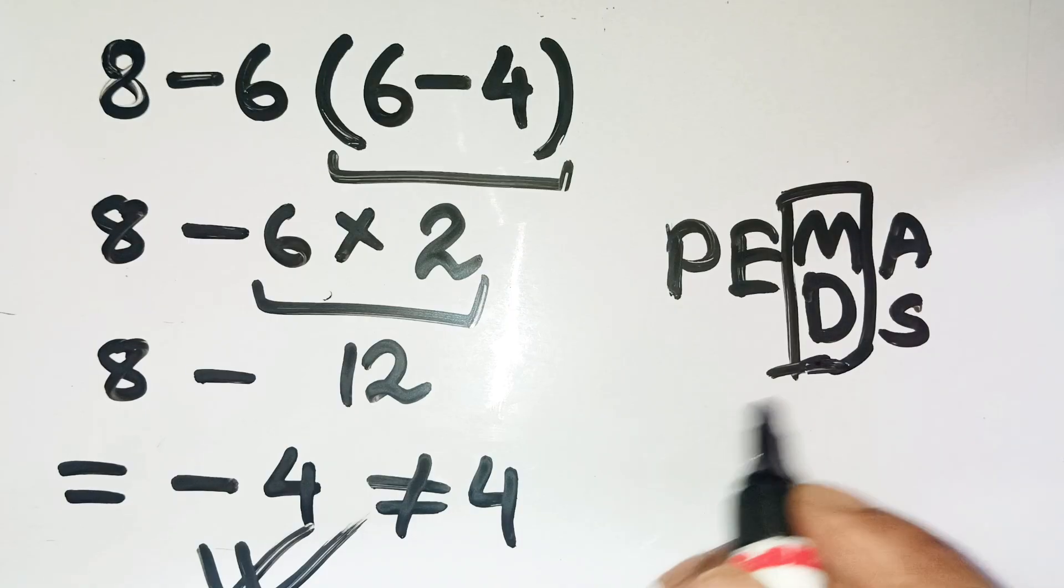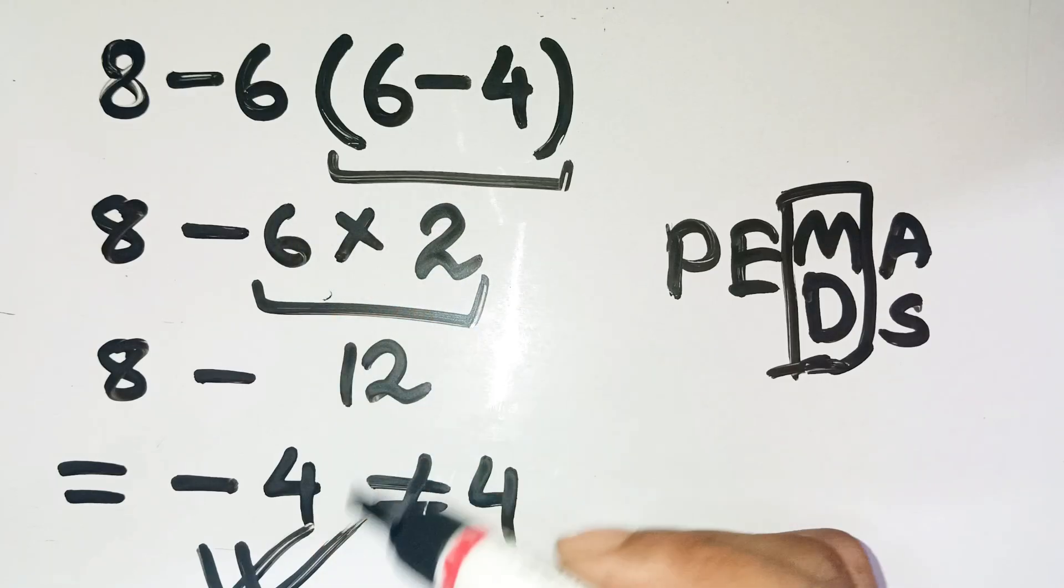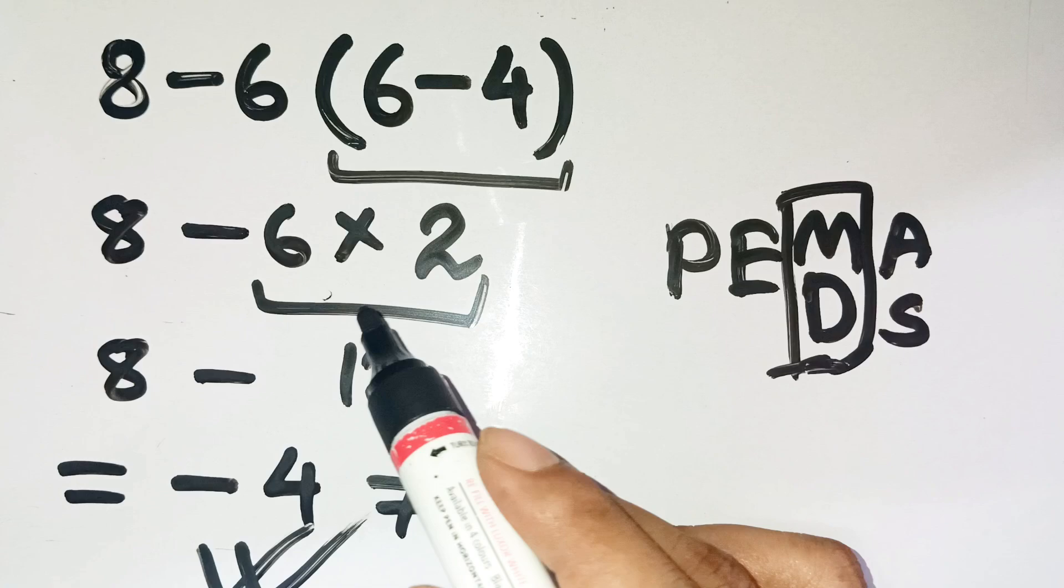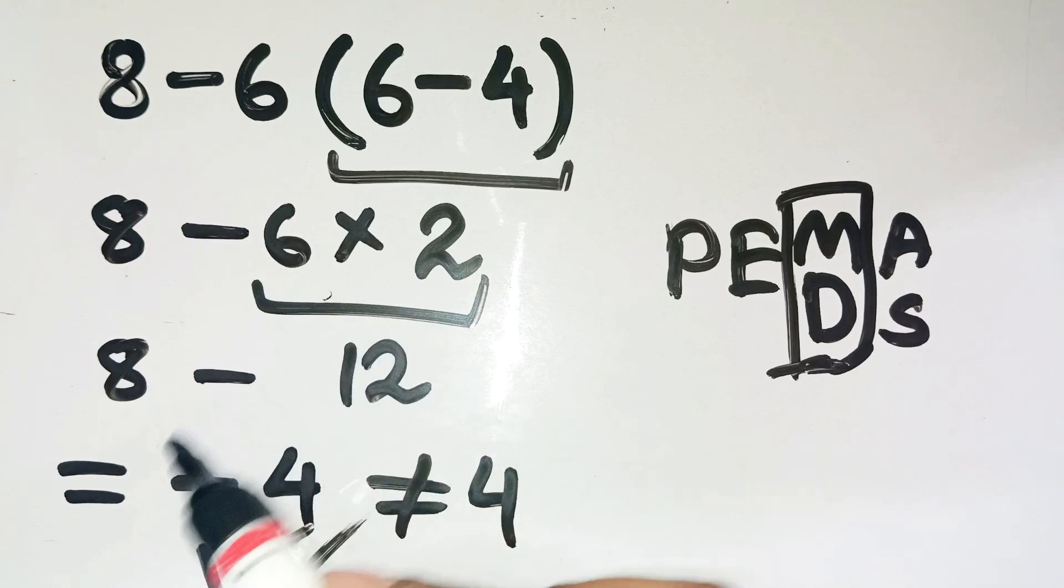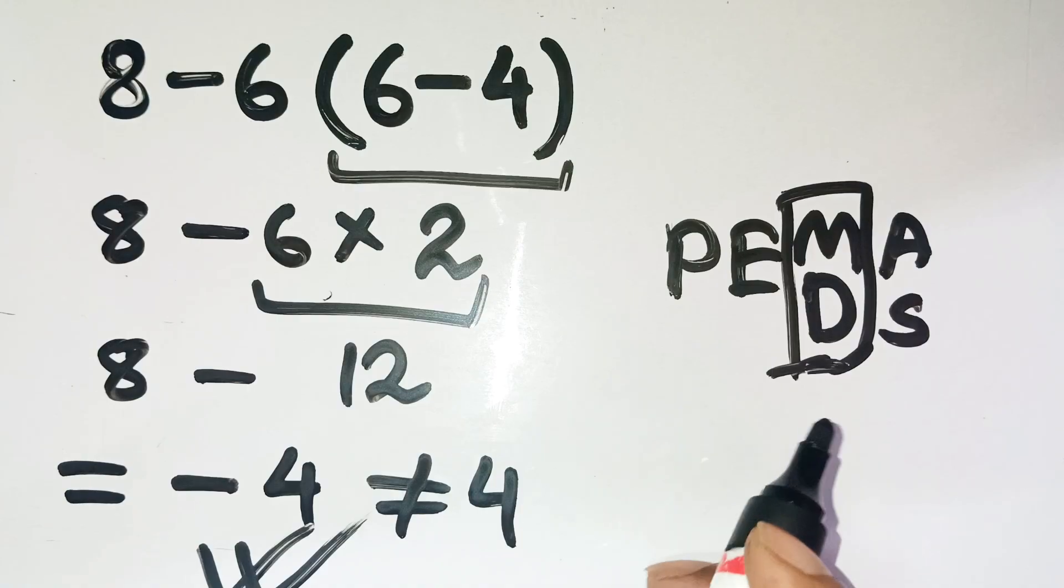So next time you see something like eight minus six times parentheses six minus four, pause. Don't rush. Handle the parentheses, then the multiplication, and only then subtract. It's a neat reminder that math isn't about guessing. It's about structure and sequence.